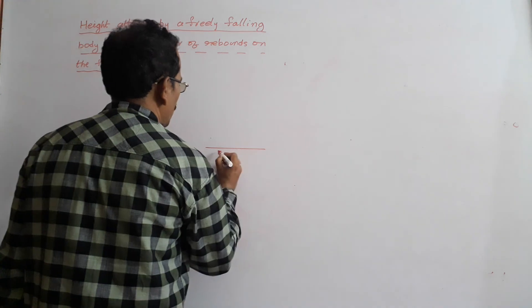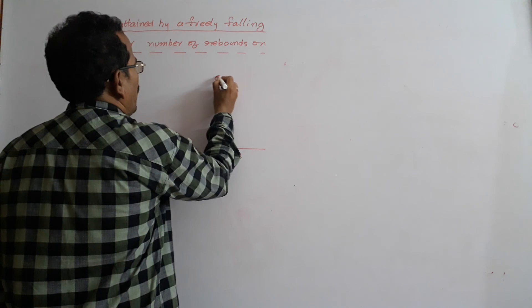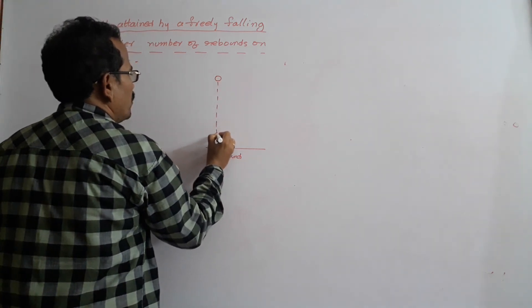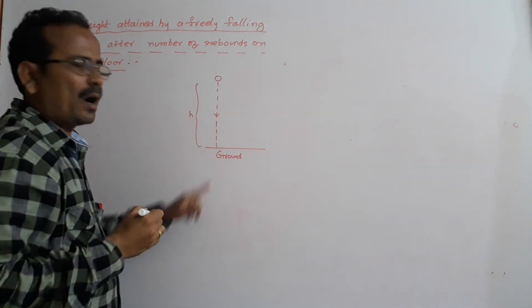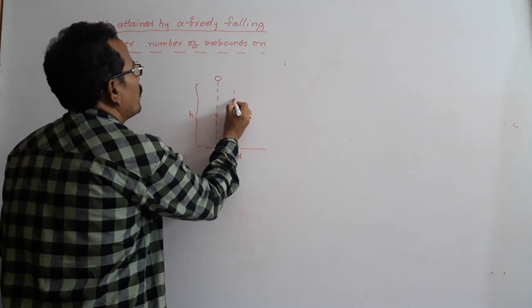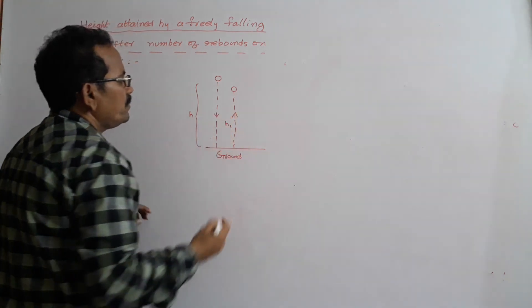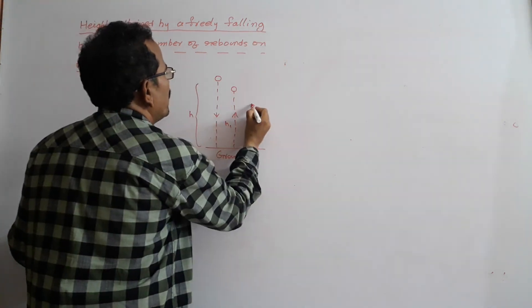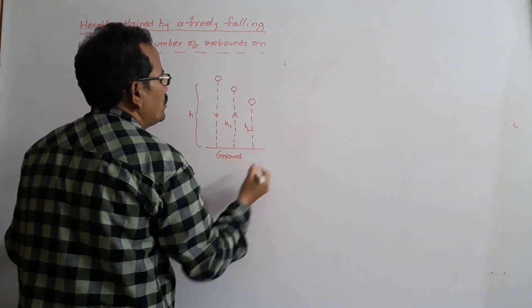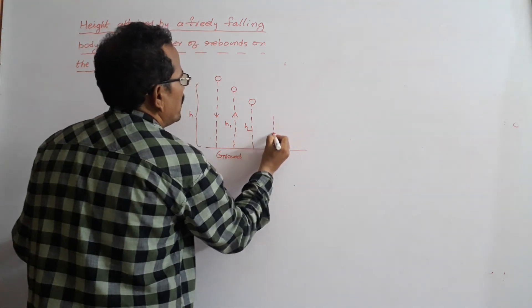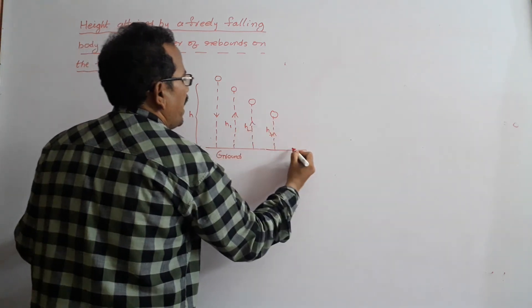This is the ground. A body is dropped on the ground from a height H. After the first collision, it rebounds to a height H1. After the second collision, it rebounds to a height H2. After the third collision, it rebounds to a height H3, and so on.